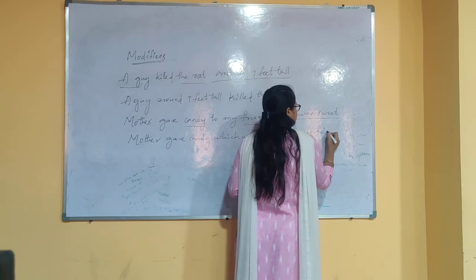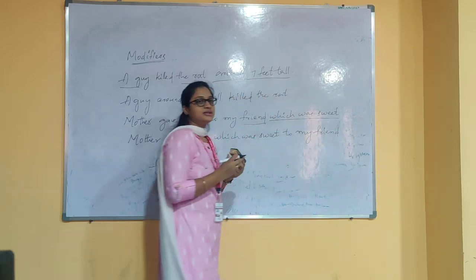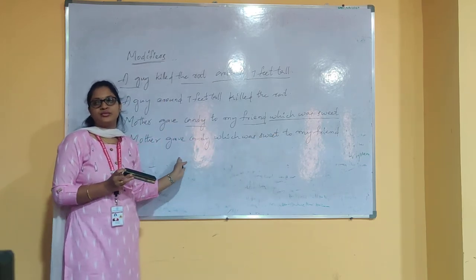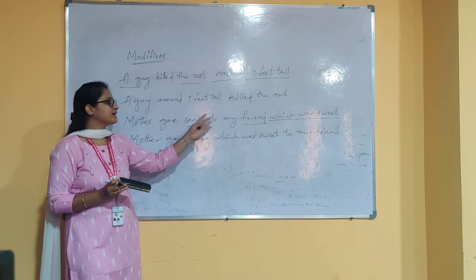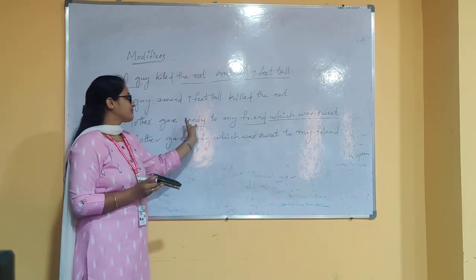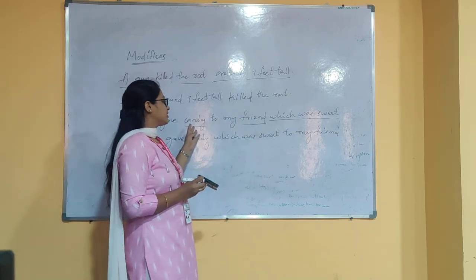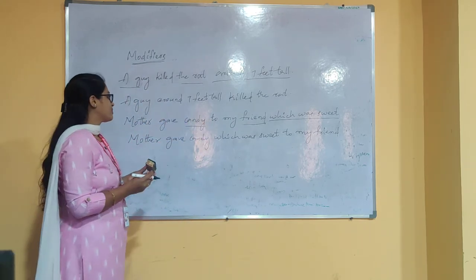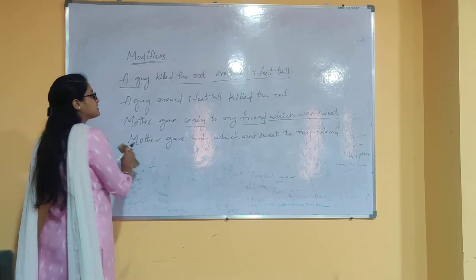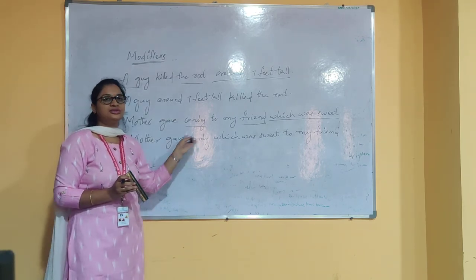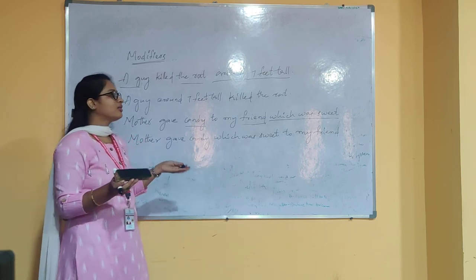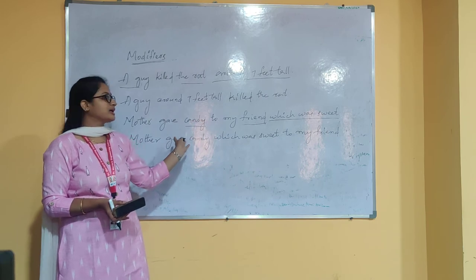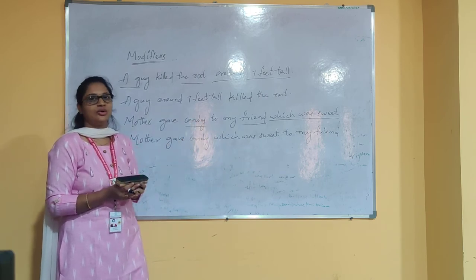The misplaced modifier 'which was sweet' is intended to modify the noun 'candy,' not the noun 'my friend.' This is how you find out what the modifier actually is and how to keep the correct format when dealing with misplaced modifiers.